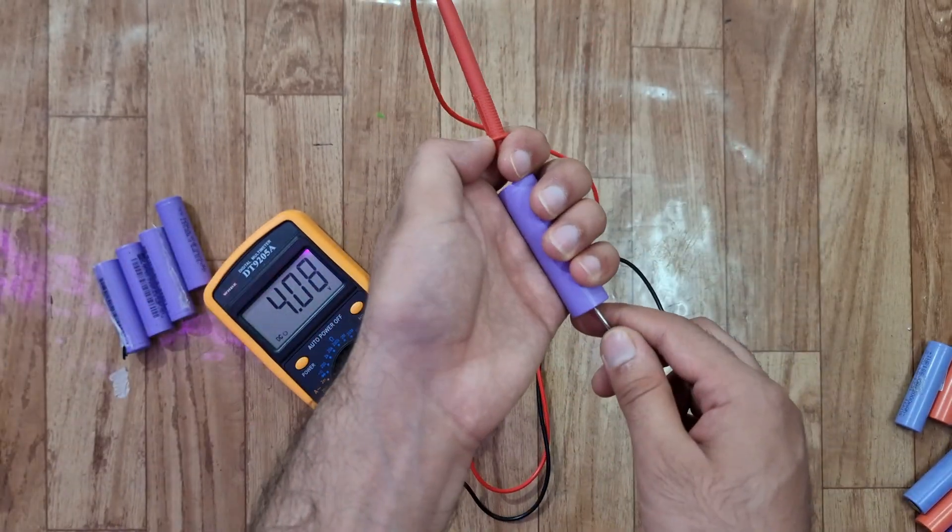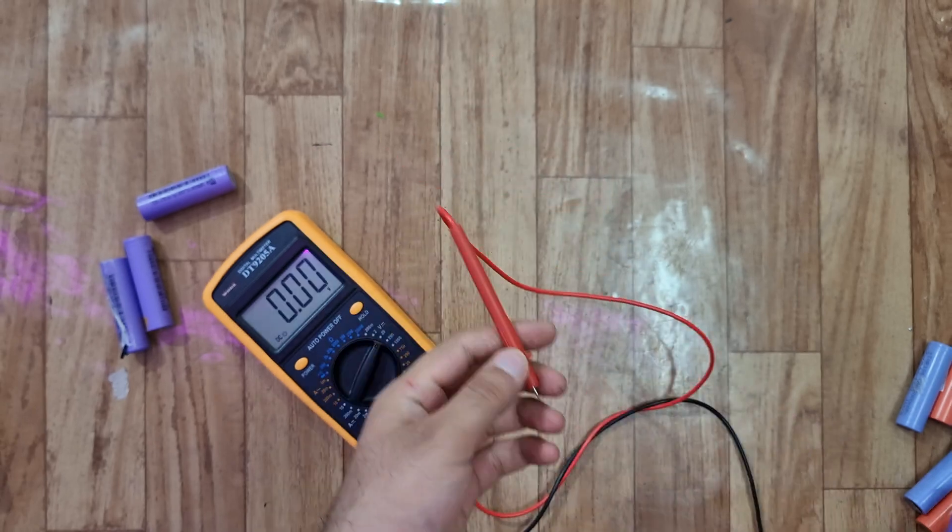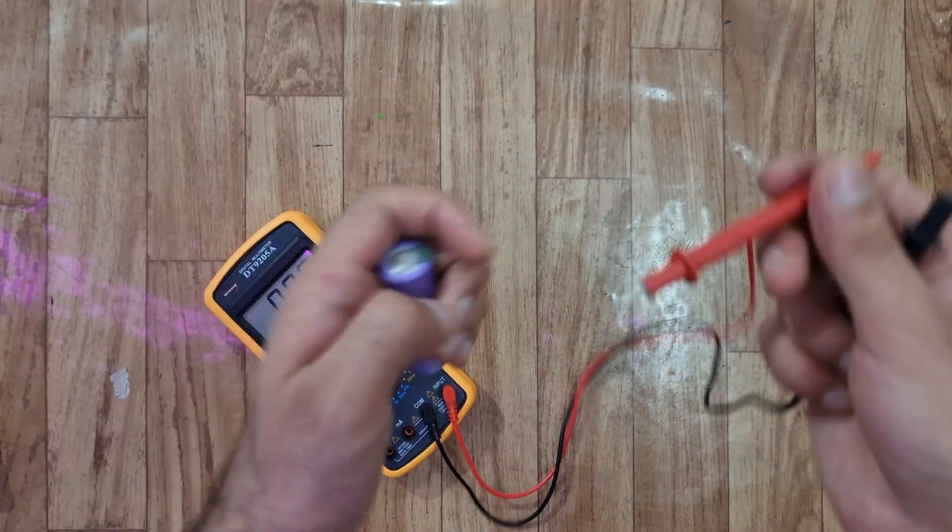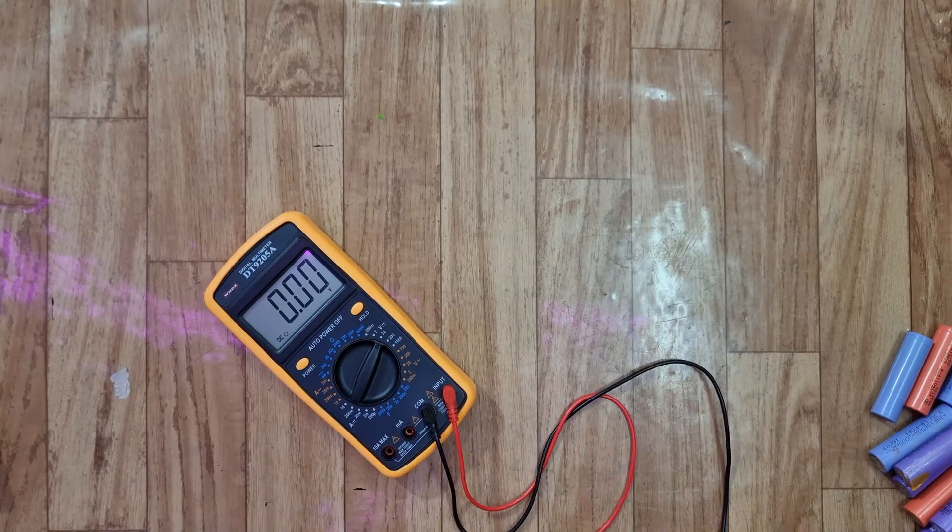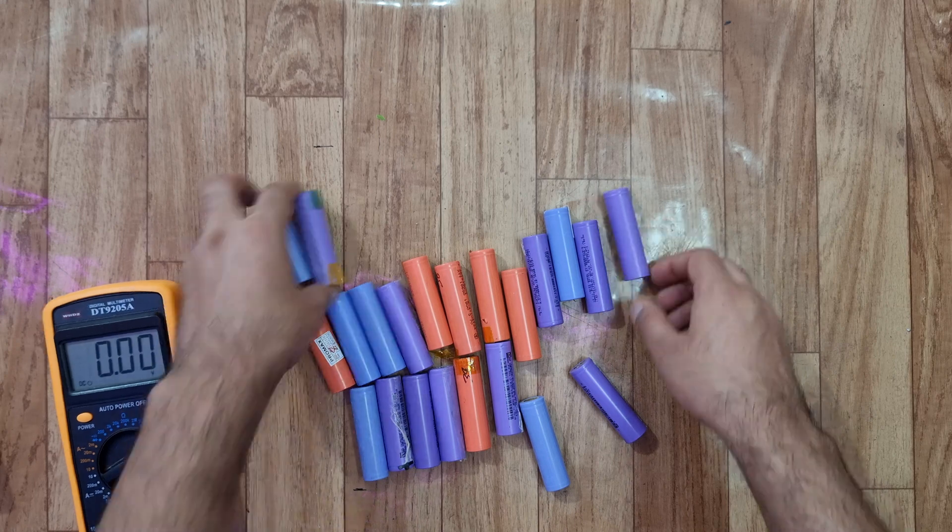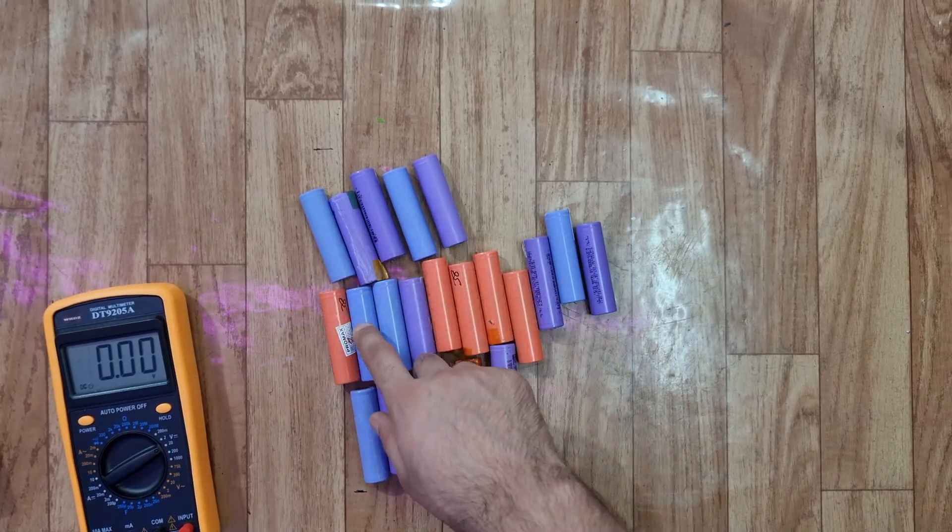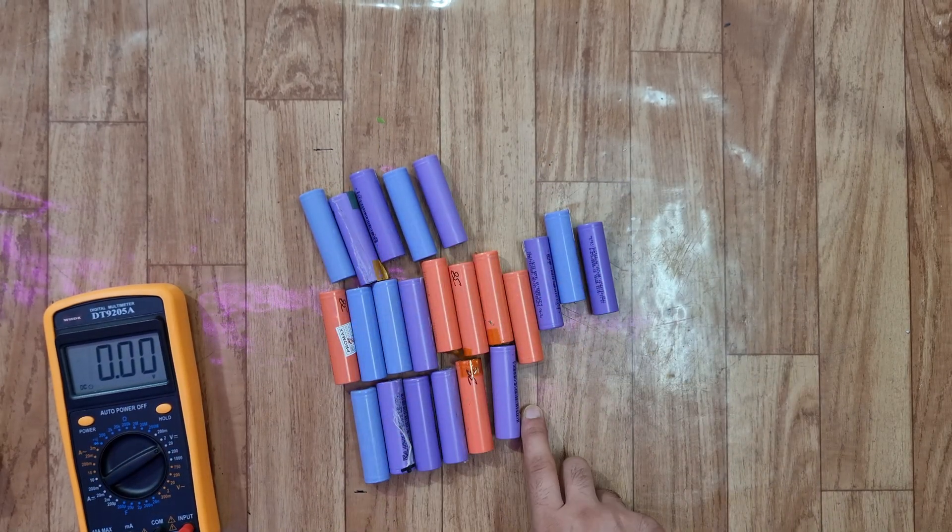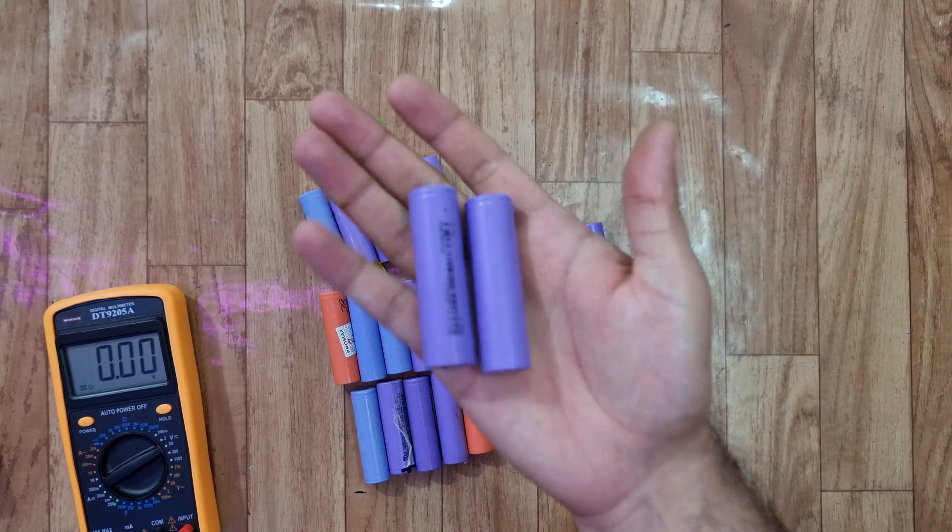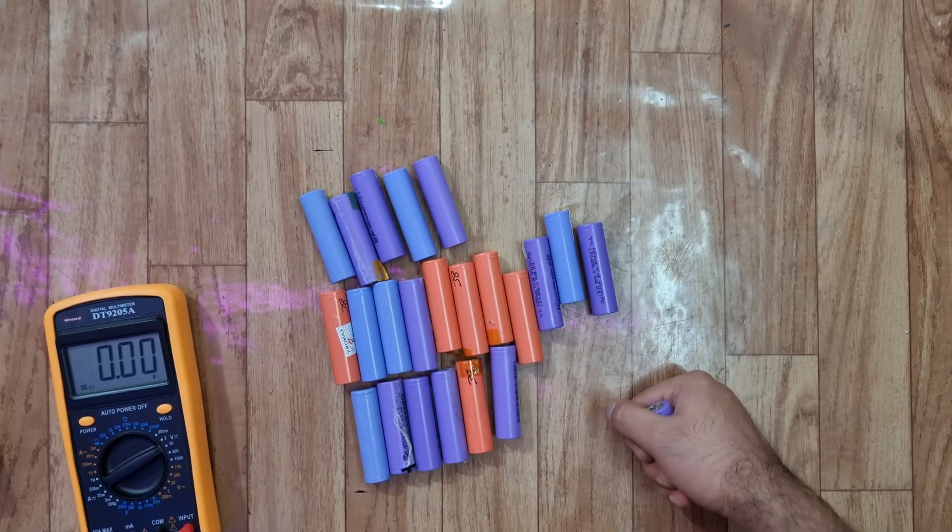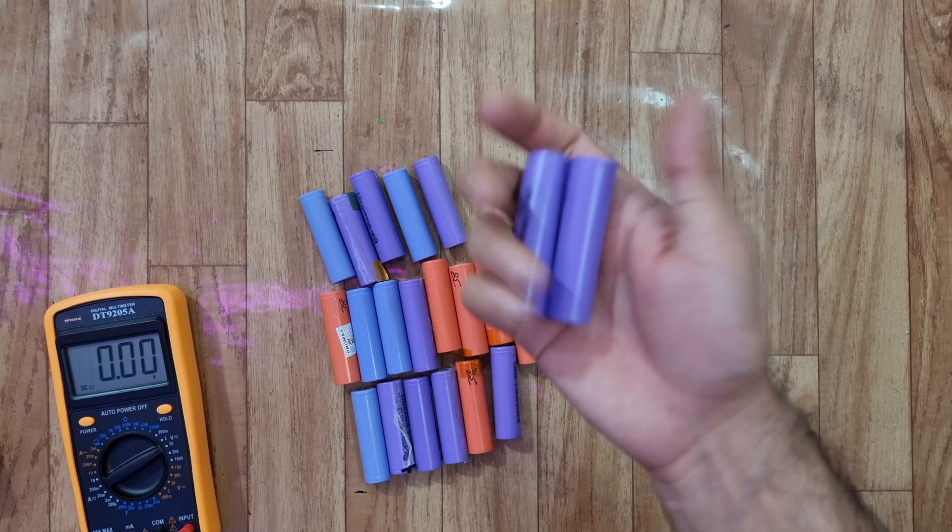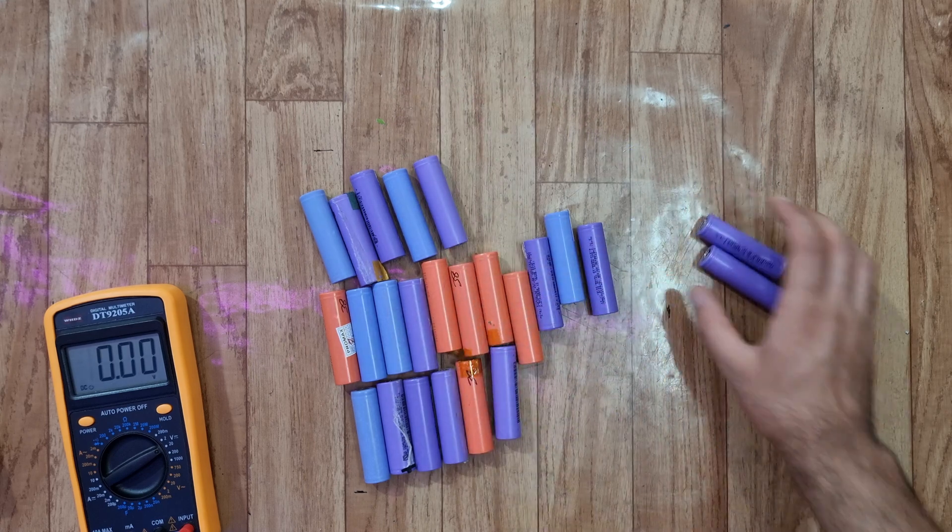So upon testing all of these cells, only 2 were faulty. I got pretty lucky on this one as out of 24 cells, only 2 were faulty and I got 22 working cells. I will be using these cells in my future projects.